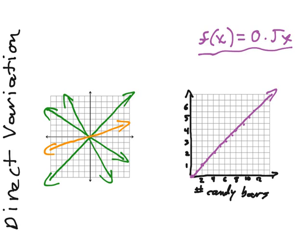Now, direct variation is a basis starting point for linear functions and relationships, so we're going to take this idea and build onto it.